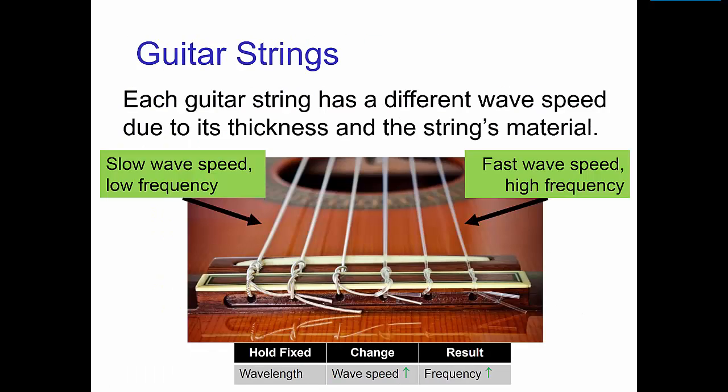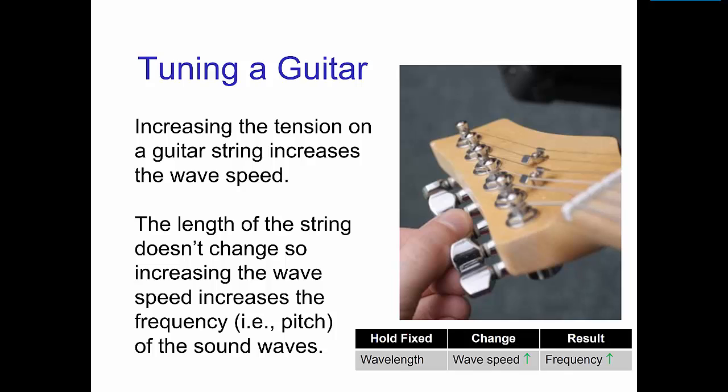Each guitar string has a different wave speed due to the string's thickness and the material that it's made of. The strings with a slow wave speed produce low notes, and the strings with a fast wave speed produce high notes. Increasing the tension on a guitar string increases the wave speed. The length of the string doesn't change, so increasing the wave speed increases the frequency of the sound waves. The tighter the string, the higher the pitch of the note.